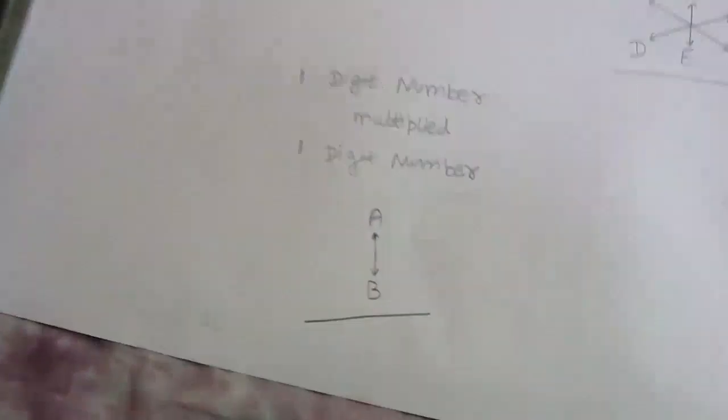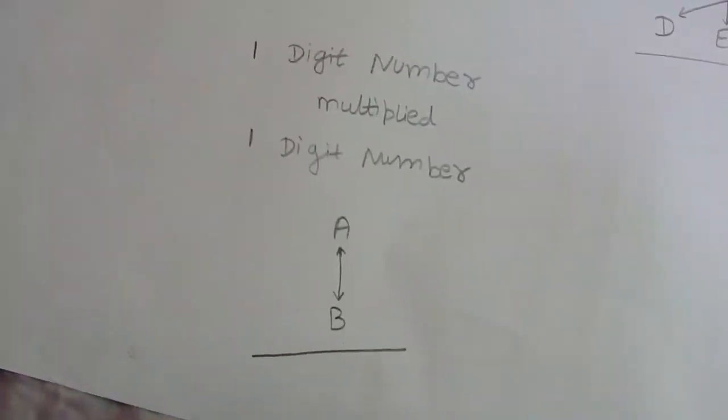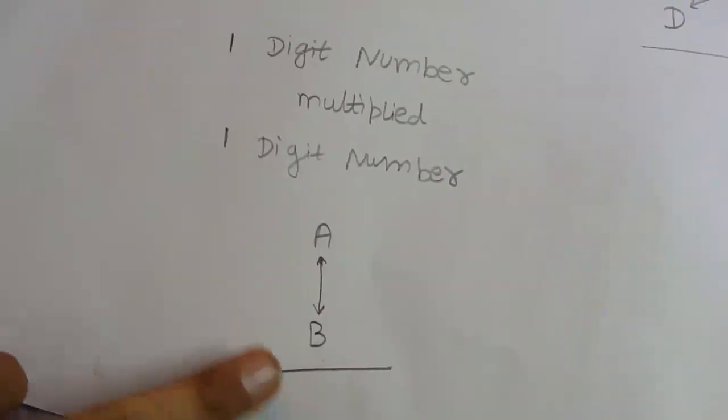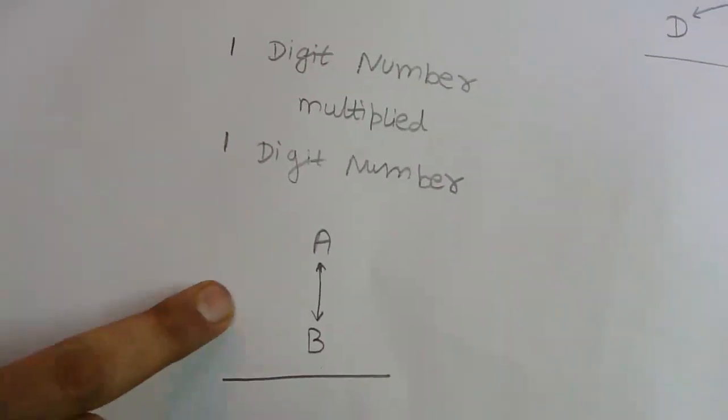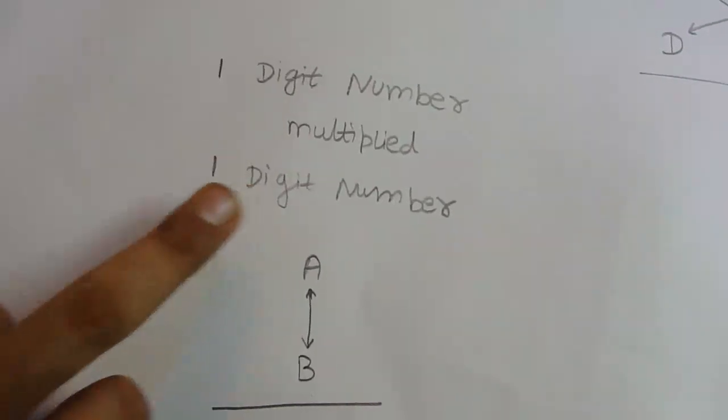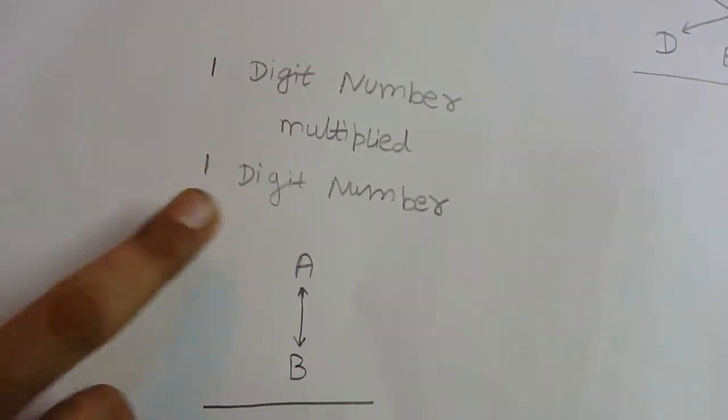Hello friends, my name is Gaurav and I'm here to tell you how to calculate fast. Here are three rules. Rule number one: multiply A and B, the two numbers—one digit number multiplied by one digit number, like 7 times 3 equals 21. The second rule is how to multiply a two-digit number.